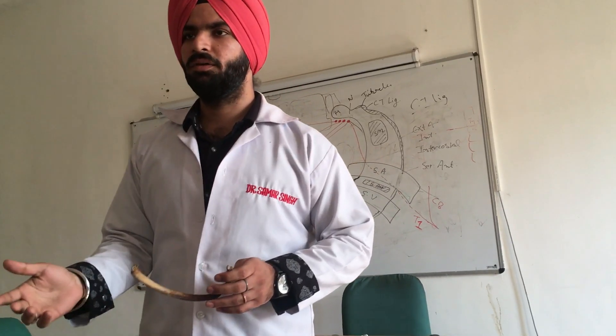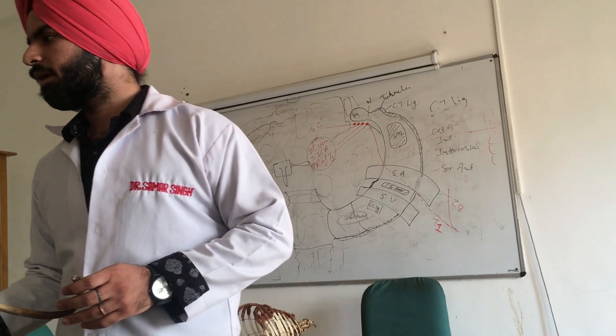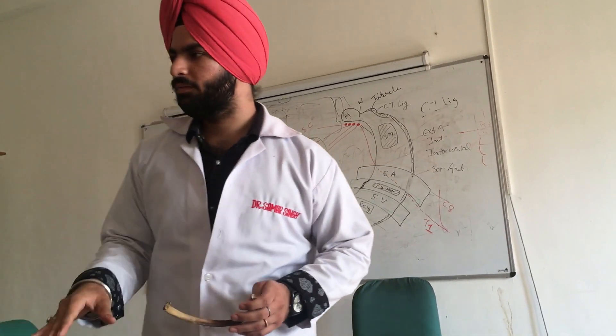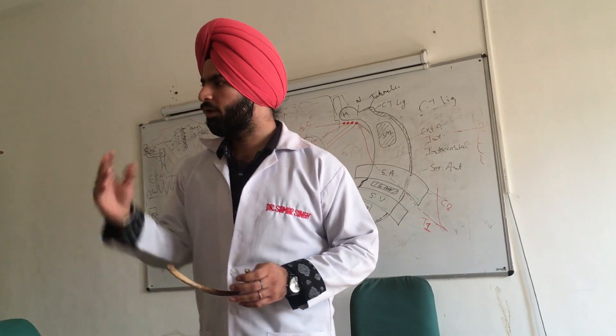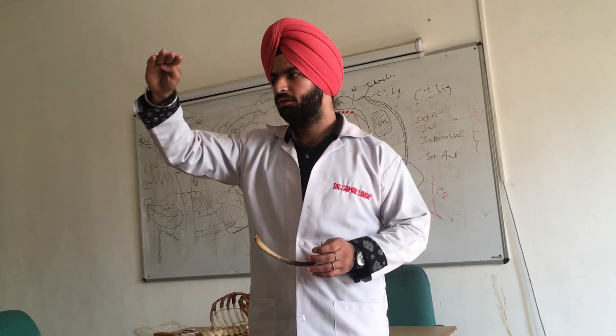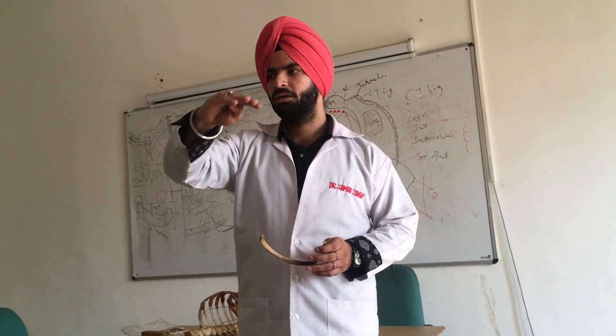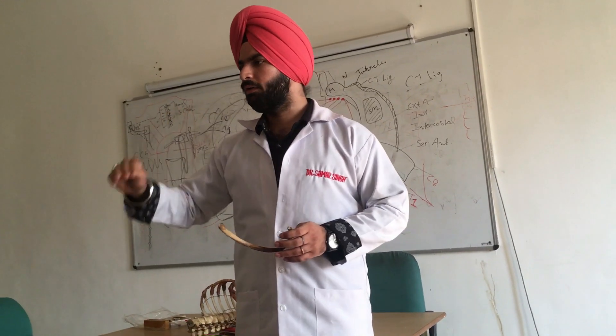Second classification: true ribs and false ribs. True ribs are 1st to 7th, and false ribs are 8th to 12th.